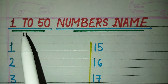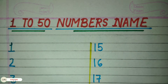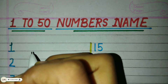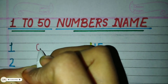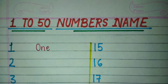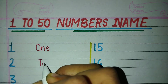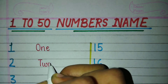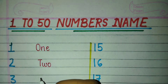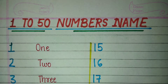Hello! Today we learn about one to fifty numbers name. One — O-N-E — 1. Two — T-W-O — 2. Three — T-H-R-E-E — 3.